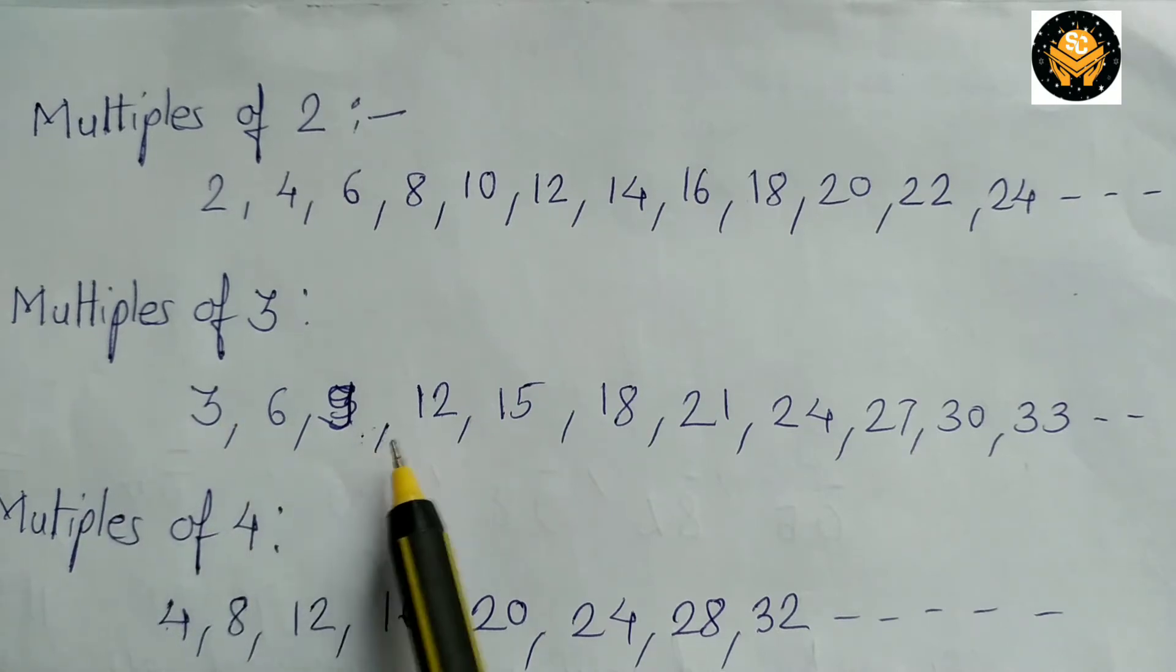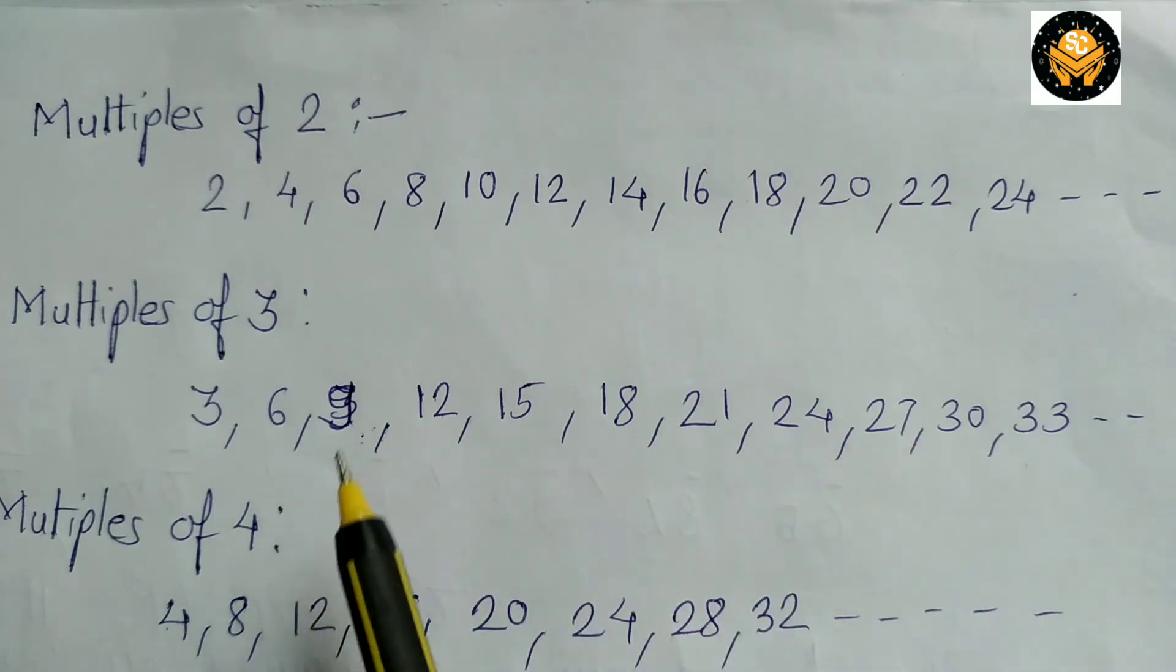Here 3, 6, 9, 12, 15, 18 and so on are the multiples of 3. Similarly the numbers in 4 times table are the multiples of 4. 4, 8, 12, 16, 20, 24, 28, 32 and so on are the multiples of 4.